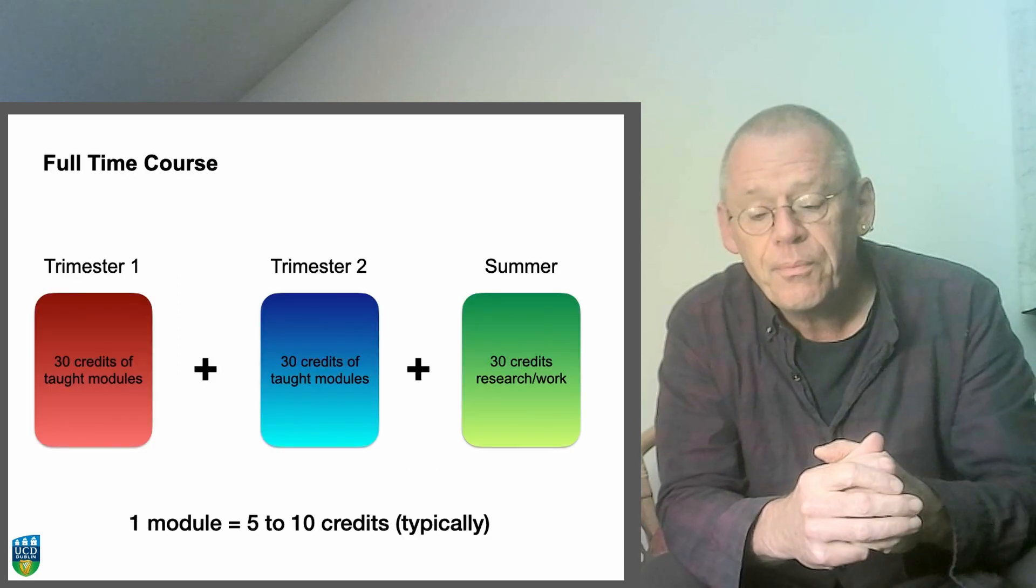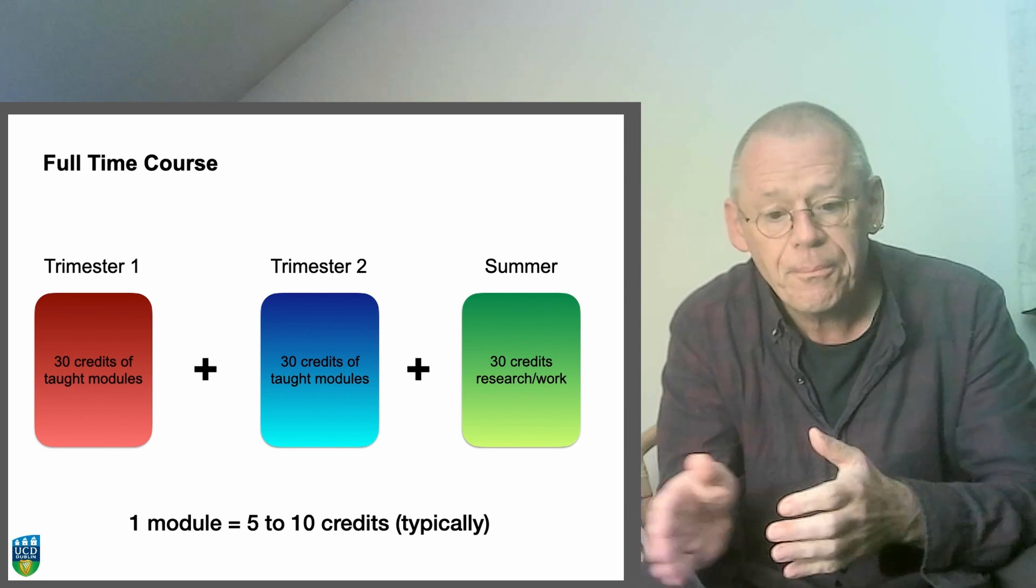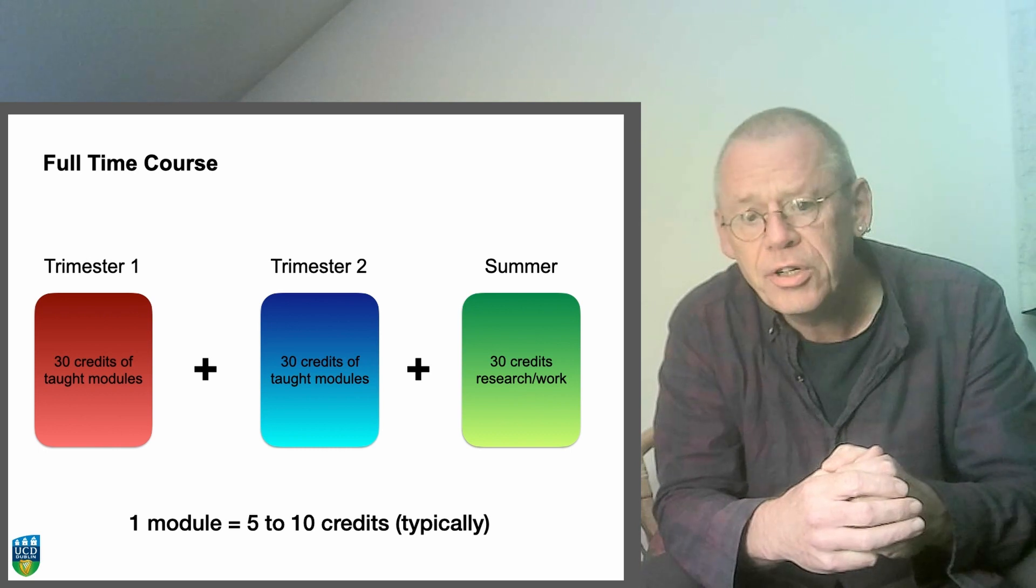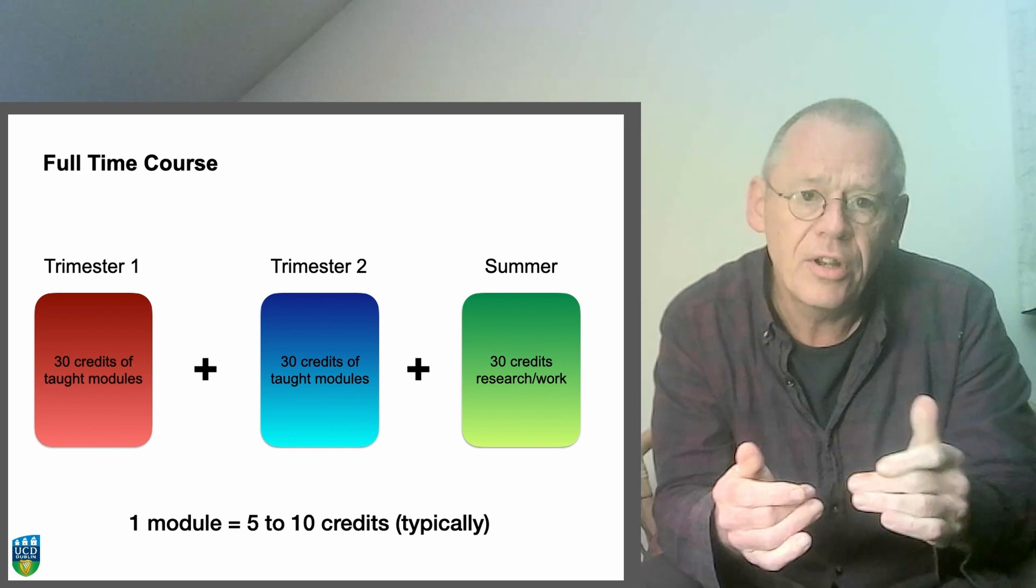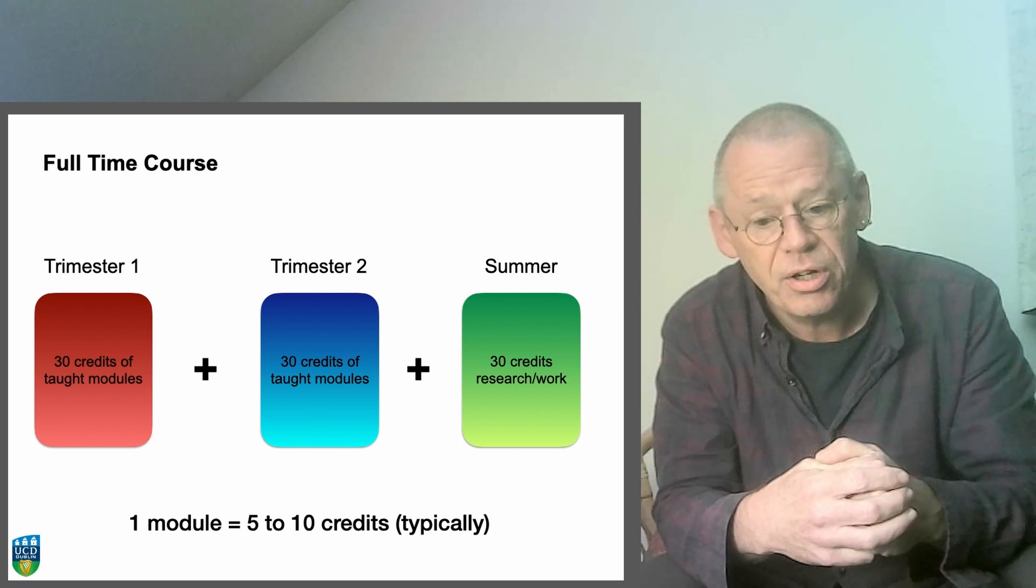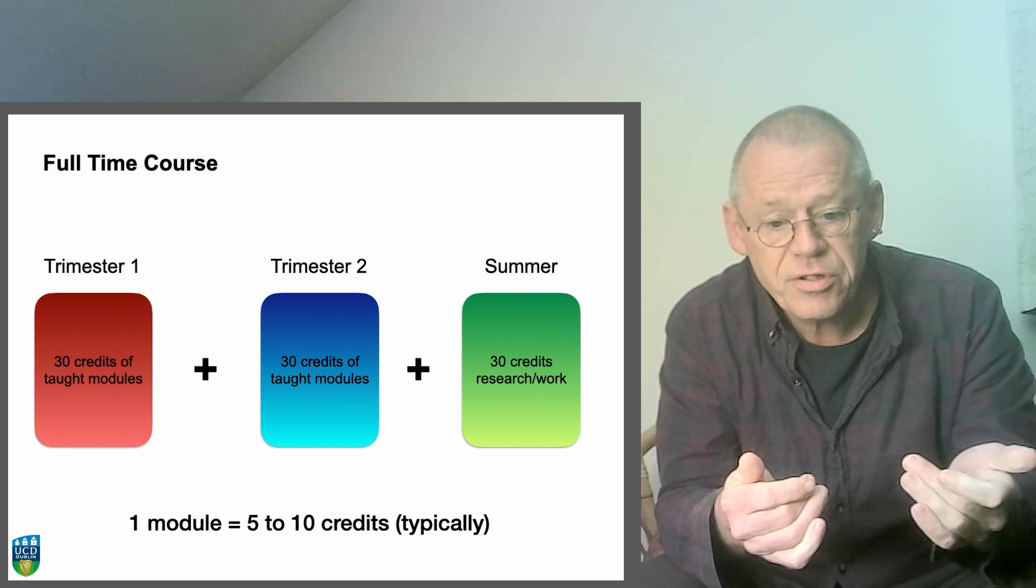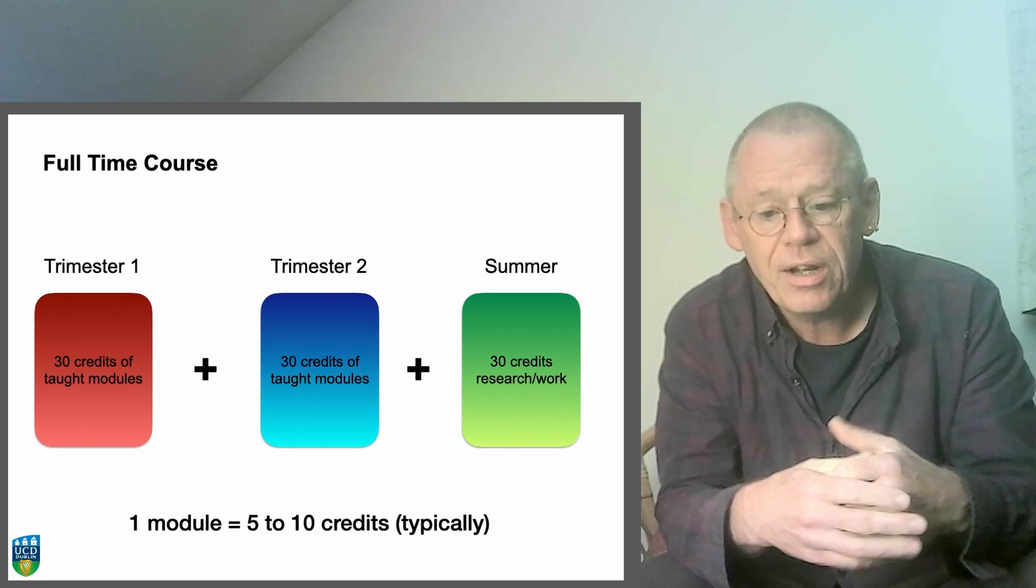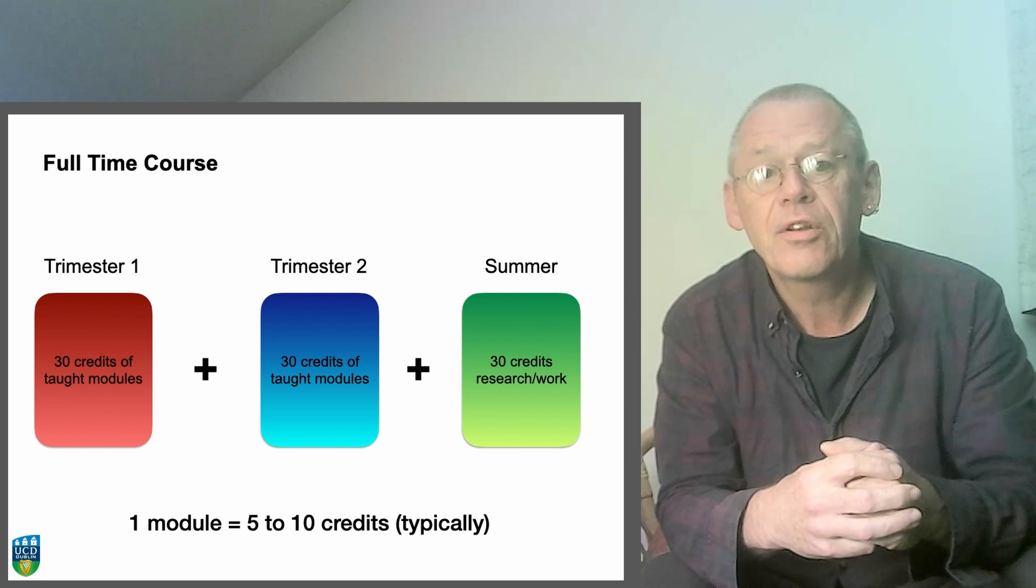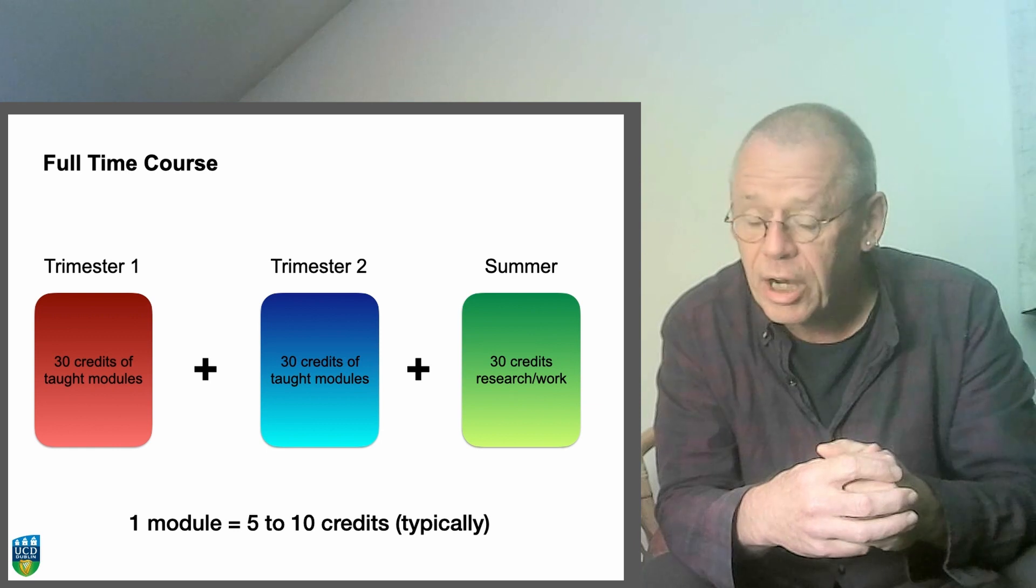In the programme, there are two taught trimesters of modules, and the summer. In each trimester, you take what we count as 30 credits of modules, and a single module is usually five credits, but sometimes 10, and occasionally other values. So we expect 30 credits in the first trimester, 30 credits in the second trimester, and then there's a further 30 credits that are earned in the summer. So this is a 12 month programme, not a nine month programme.